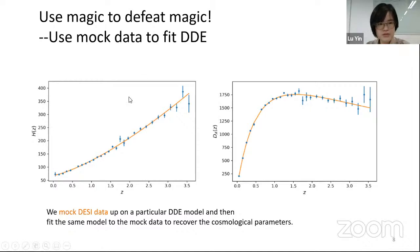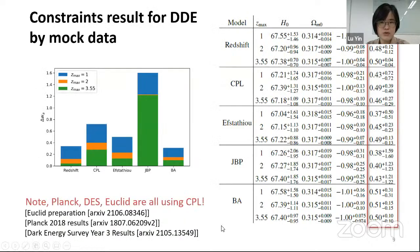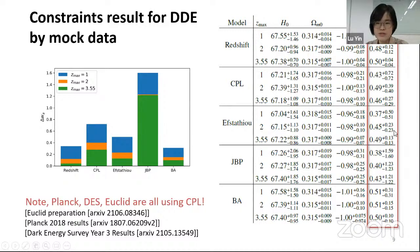Next, we use mock data to fit these dynamic dark energy models — we use magic to defeat magic. We mock the DESI data based on a particular dynamic dark energy model, and then fit the same model to recover the cosmological parameters. The result for W_A is very interesting. With a slightly higher different redshift Z_max, the error bar in W_A becomes smaller and smaller.